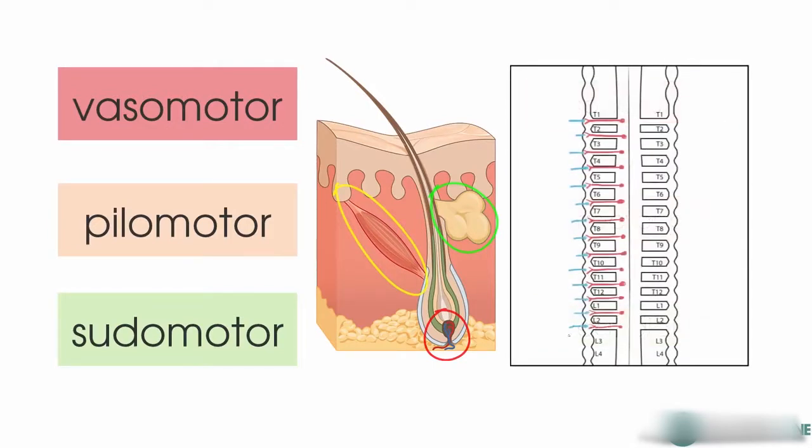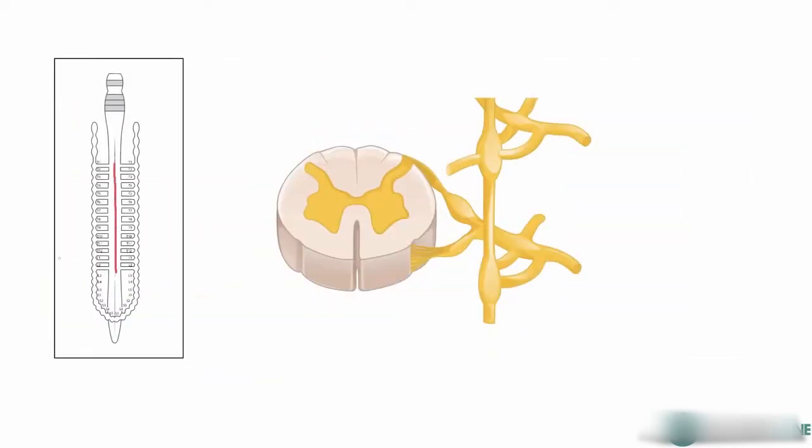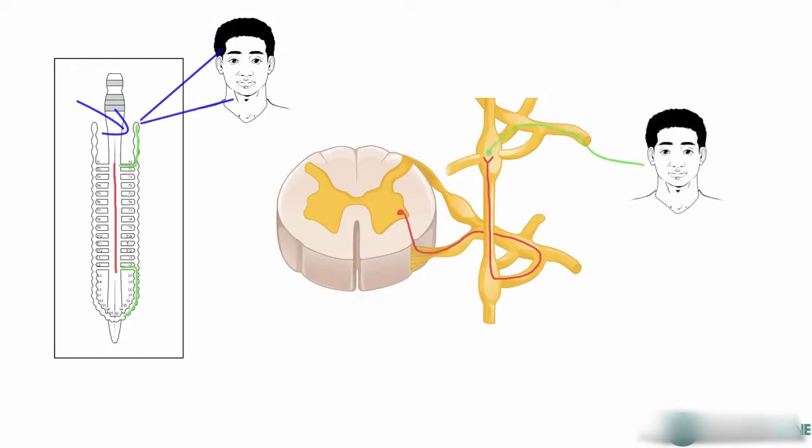Now next we'll take a look at the visceral distribution of the sympathetic nervous system, and this is where things get a little bit more interesting. Remember we talked about how the neuron could enter the sympathetic trunk and ascend or descend? This is the case for sympathetic innervation to the head and neck, and also to lower abdominal and pelvic viscera through sacral splanchnic nerves.